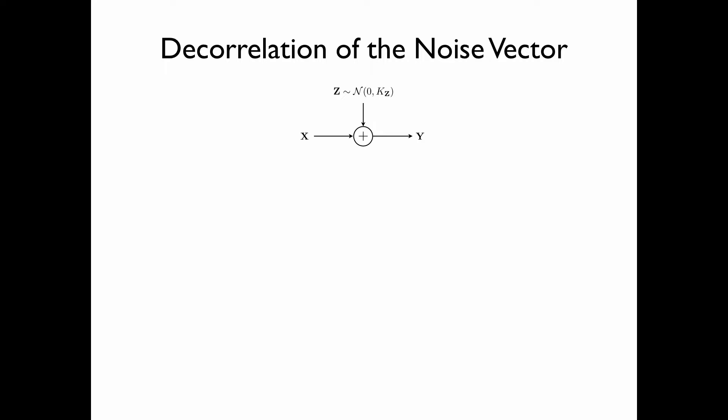The main idea of the analysis is the diagonalization of the noise covariance. Consider a system of correlated Gaussian channels where the covariance matrix Kz can be diagonalized as Q·Λ·Q^T. We convert the original system by installing a linear transformation Q at the input and Q^T at the output.